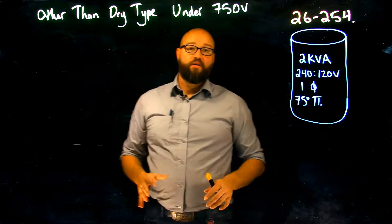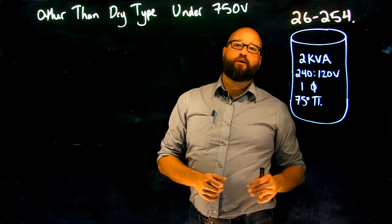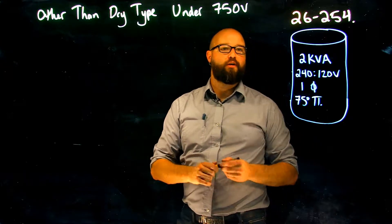So what we need to do first off with any transformer calculation is we need to figure out what is our rated current. And since we're only dealing with the primary side, let's figure out the rated primary current.